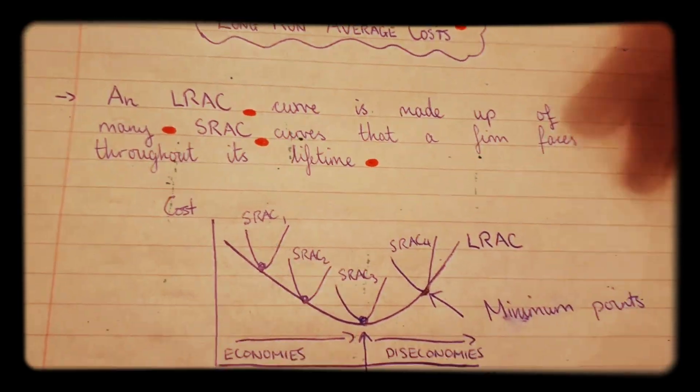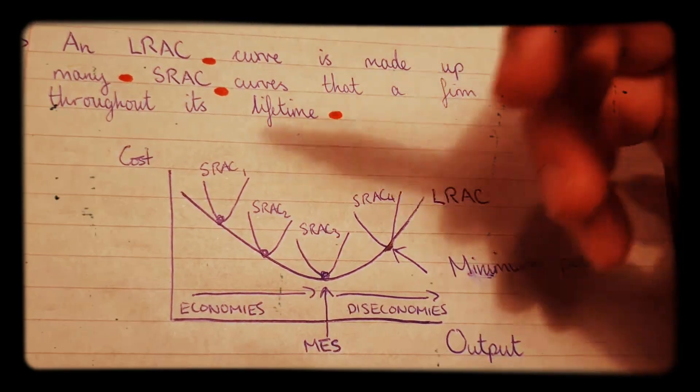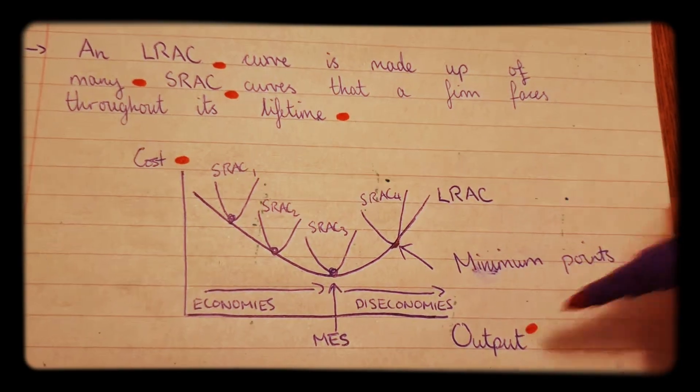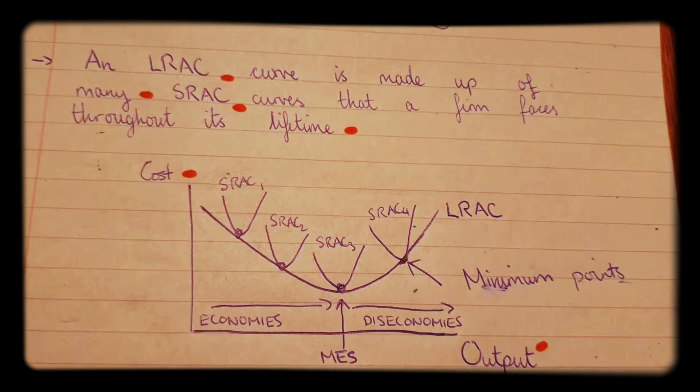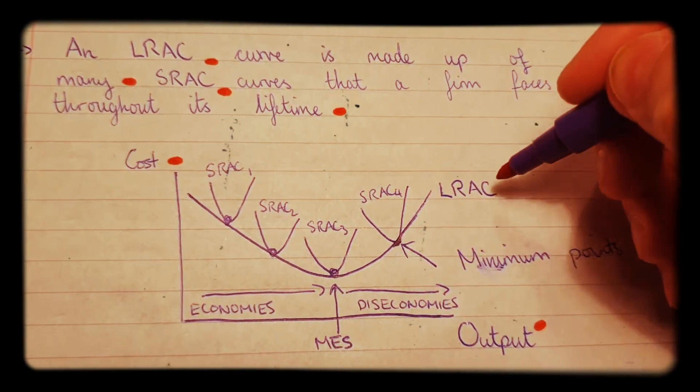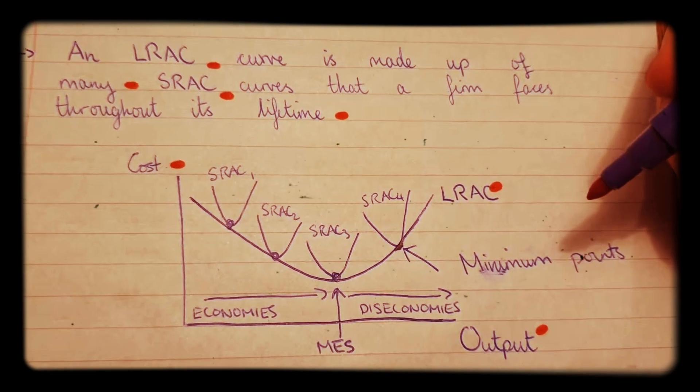So if we look at this diagram here, we have costs on the y-axis up here and we have output down here on the x-axis. Now this big U-shaped curve here, this is the LRAC, the long run average cost curve.